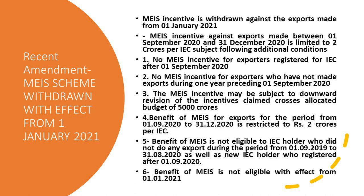Recent amendment: MEIS incentive scheme is withdrawn — it is no more available against exports made from 1st January 2021. MEIS incentives against exports made between 1st September 2020 and 31st December 2020 is limited to Rs. 2 crores per IEC (Importer-Exporter Code), subject to additional conditions. No MEIS incentive for exporters registered under IEC after 1st September 2020. Also, no MEIS incentive for exporters who have not made exports during the one year preceding 1st September 2020.